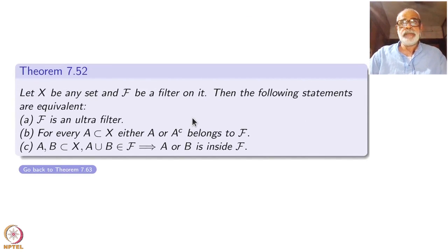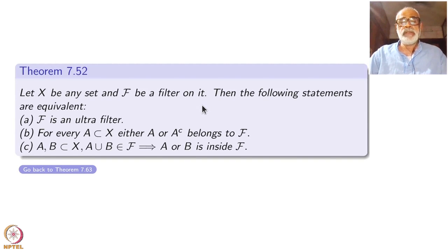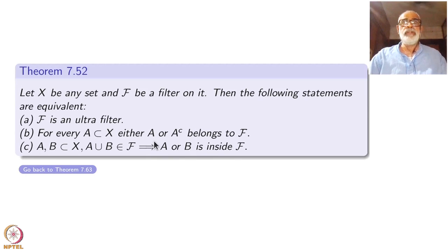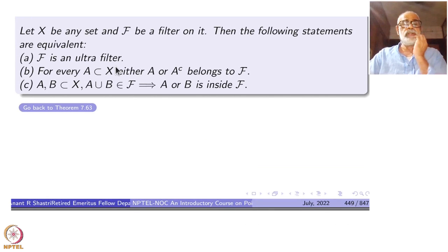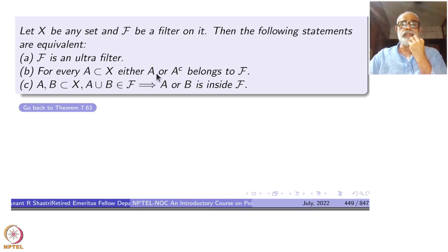Let X be any set and F a filter on it. Then the following statements A, B, C are all equivalent. So we have three definitions of ultrafilter. Statement A: F is an ultrafilter. Statement B: for every A inside X, either A or A-complement belongs to F. Both of them cannot be there simultaneously — so exactly one of A or A-complement belongs to F. This is quite a strong condition.